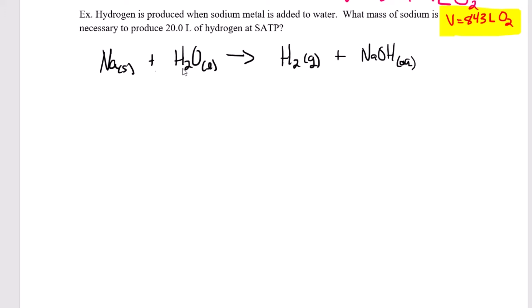Now I need to make sure this is balanced. And it's not. I've got two hydrogens on the left, but I've got three on the right. So I can fix this with a two here. Then I'm going to need a two here and a two here. So I've got two sodiums, four hydrogens, two times two is four, two oxygens, two oxygens. Now we're balanced.